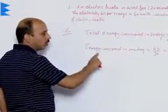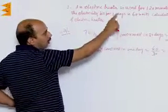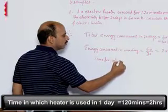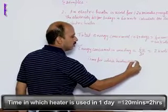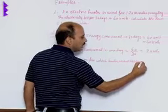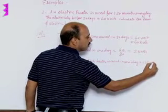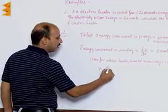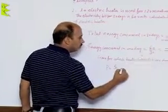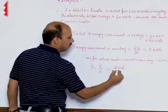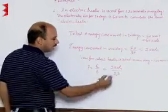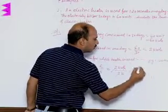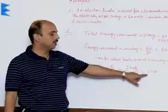Energy used in one day is 2 kilowatt hours. Time for one day is equal to 120 minutes, that is 2 hours. Power is equal to energy divided by time. So power is equal to 2 kilowatt hours divided by 2 hours, which gives 1 kilowatt. The power of the electric heater is 1 kilowatt.